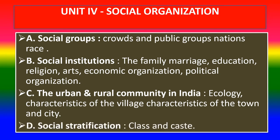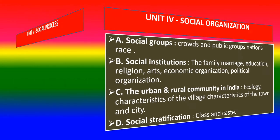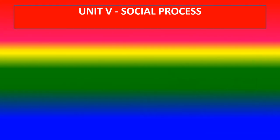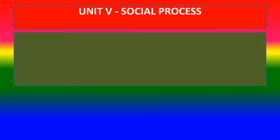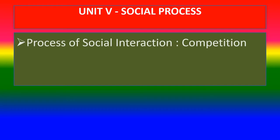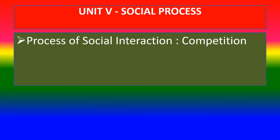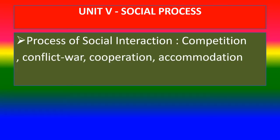Social stratification, class and caste. Unit 5 - Social process: Process of social interaction, competition, conflict, war, cooperation, accommodation and assimilation.